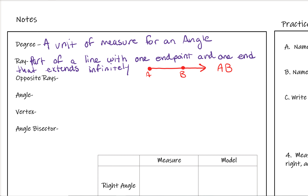For notation, we put a line over the letters — like with a line segment — but with just one arrow to signify that it is a ray going in one direction.